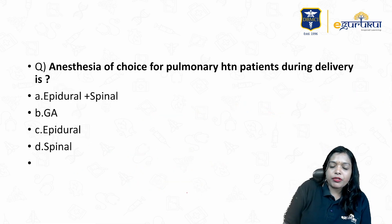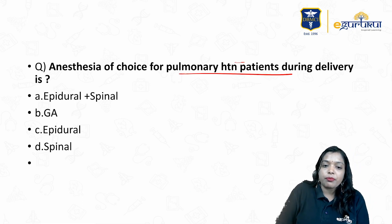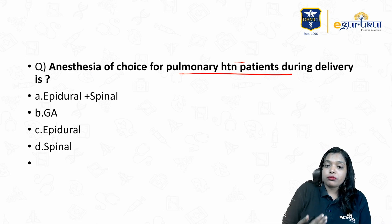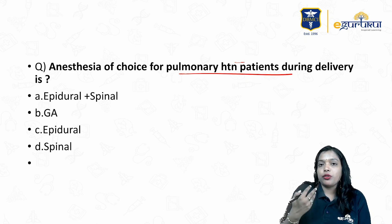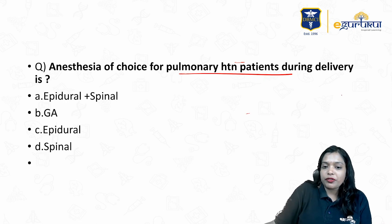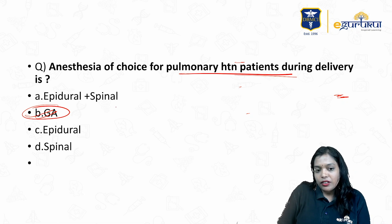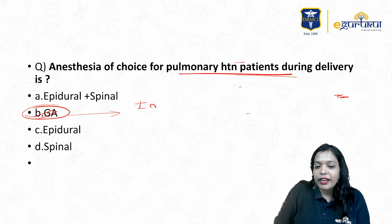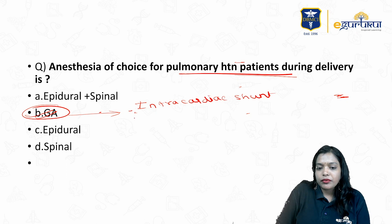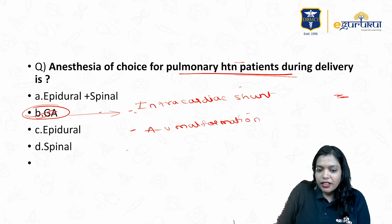MCQ 6: Anesthesia of choice for pulmonary hypertension patients during delivery. Pulmonary hypertension ideally comes under WHO category 4 — they should not continue the pregnancy and termination should be offered. The ideal method of termination is suction and evacuation. But if they continue and undergo cesarean section, the anesthesia of choice will be general anesthesia. There are only three conditions where we use general anesthesia in cardiac disease patients: intracardiac shunts, AV malformations, and pulmonary hypertension.